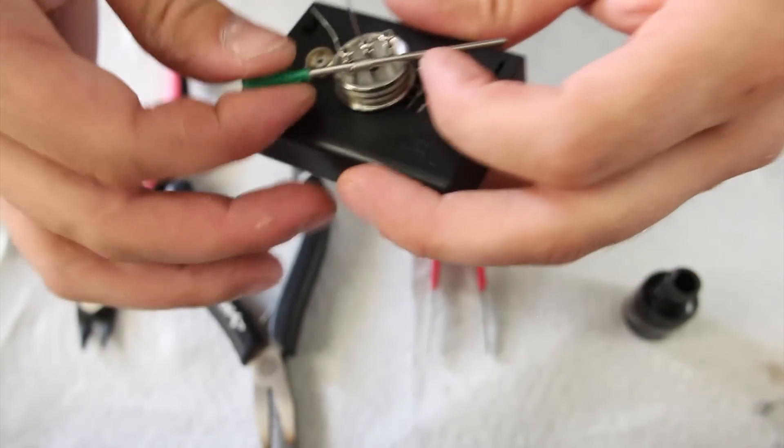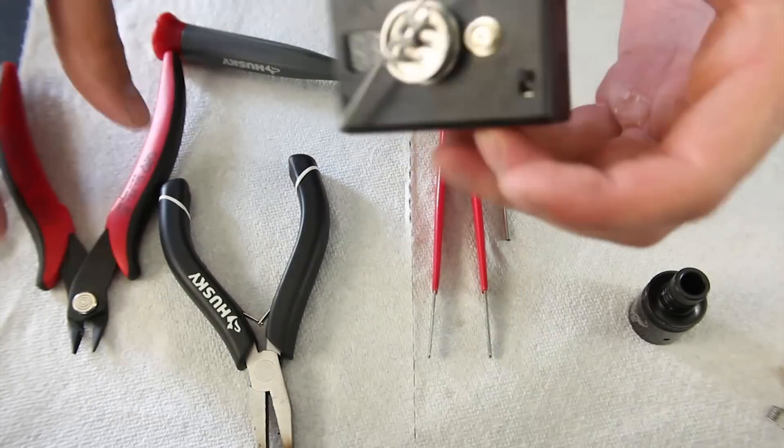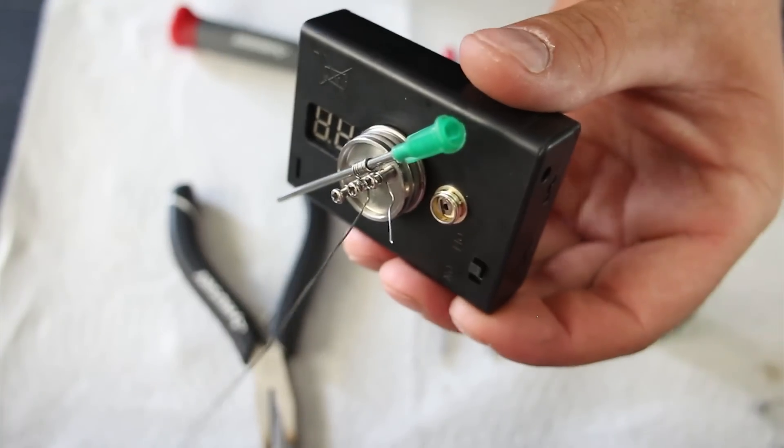Now we're going to tighten down these connections. Okay, so there's our first micro coil in place and I'm going to clip this lead on the negative because it gets in the way.